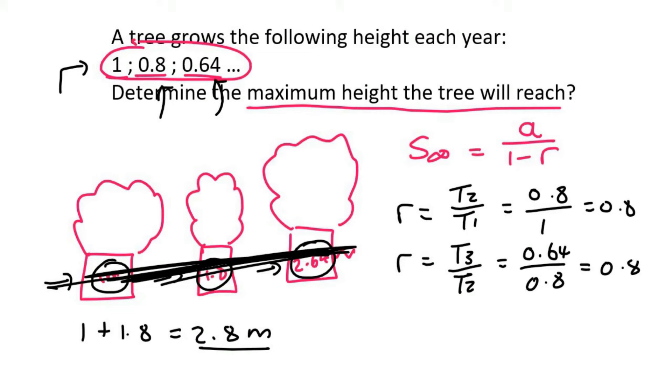So then we can go ahead and work out the sum to infinity as a, which is the first year's growth, which is 1 over 1 minus 0.8, and that will be 5.